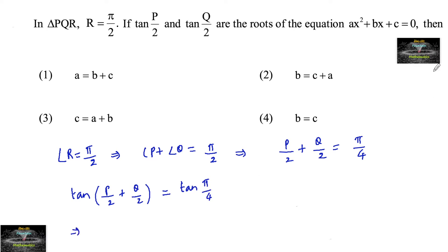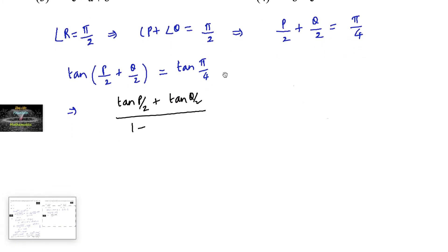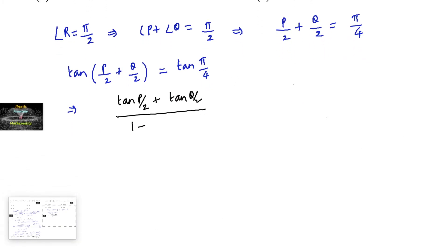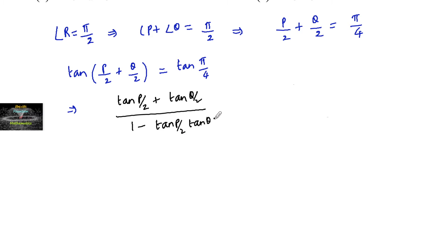Using the tan addition formula — tan(A + B) = (tan A + tan B) / (1 − tan A · tan B) — we get: (tan(P/2) + tan(Q/2)) divided by (1 − tan(P/2) · tan(Q/2)) is equal to 1. Since it is given that tan(P/2) and tan(Q/2) are the roots of the equation ax² + bx + c = 0.